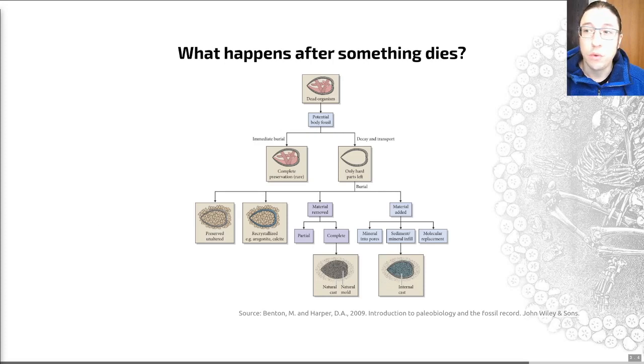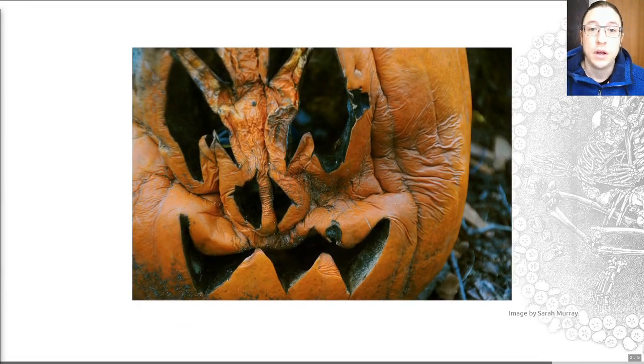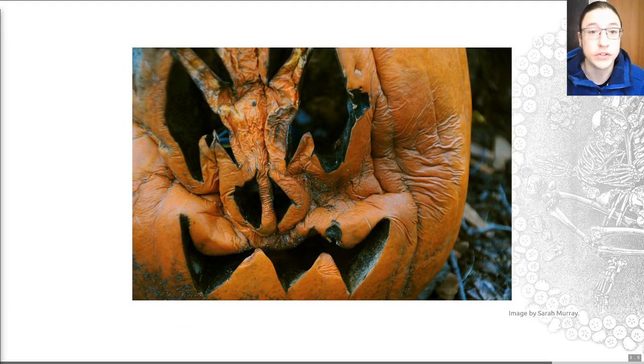So those are all of the processes that are part of this science of taphonomy, and I'm going to go through some of the more important ones in a bit more detail now. I'm going to start with this process by which soft tissues become less useful to us, which is decay.